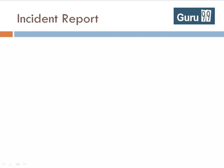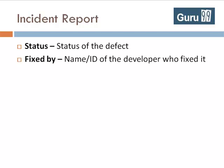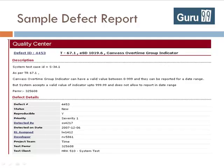Your bug report will also contain the following information. Status: the status of the defect — more on this later. Fixed by: the name or ID of the developer who fixed it. Date closed: the date when the defect is closed. Look at this sample bug report for your reference.